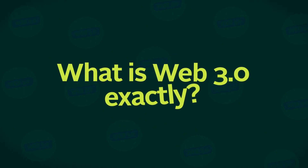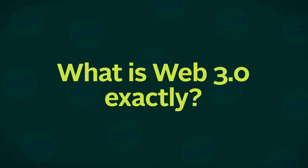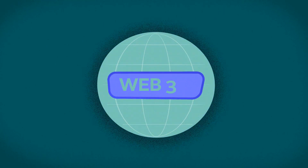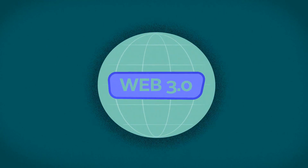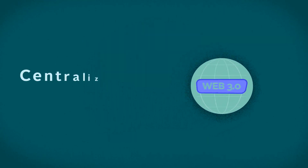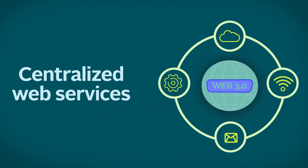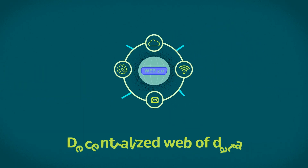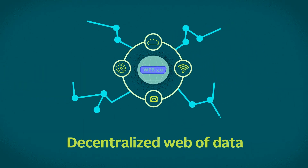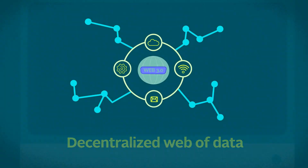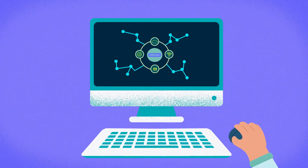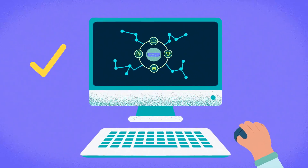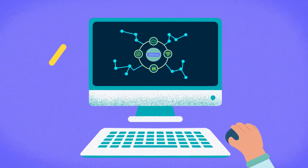So, what is Web 3.0 exactly? Web 3.0 is the next version of the World Wide Web, characterized by a move from centralized web services to a decentralized web of data that can be accessed on demand by users — and where users are in full control of their own data.